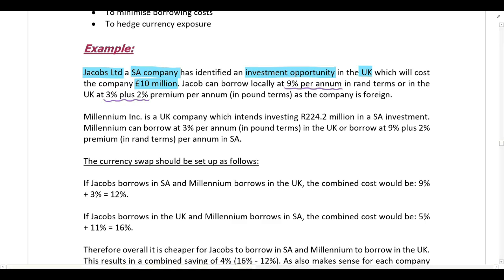We also have Millennium Incorporated, a UK company that wants to invest 224.2 million rand in South Africa. They can borrow at 3% per annum in pound terms in the UK, or they can borrow at 9% plus 2% in rand terms in South Africa.